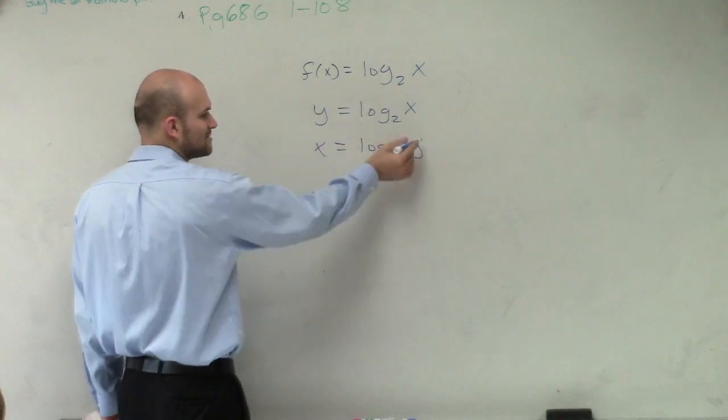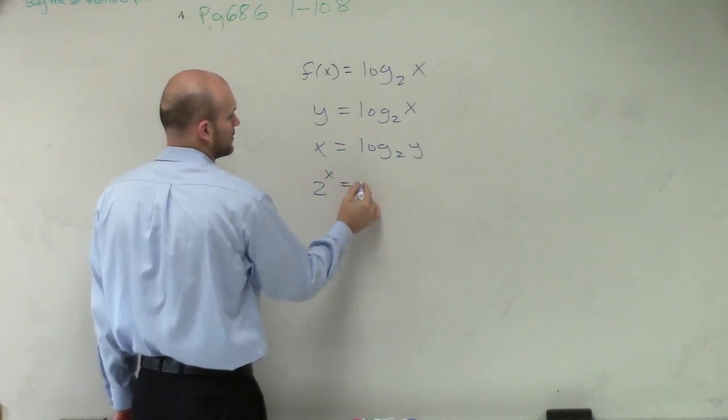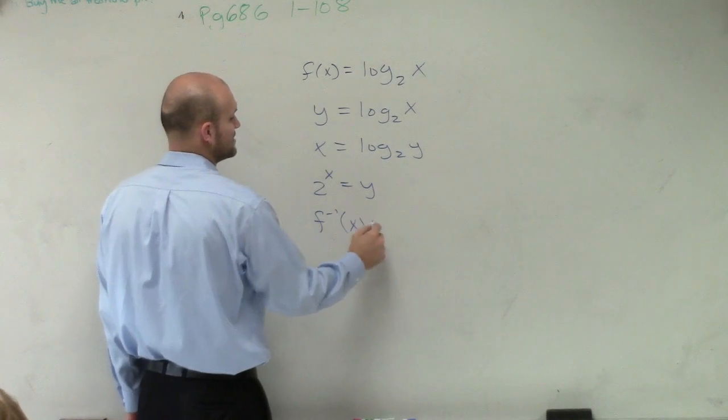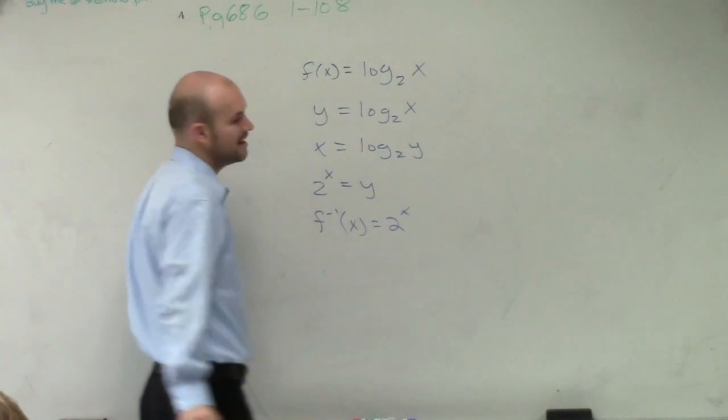This would be 2 raised to the x power equals y. So therefore, now we rewrite this as f inverse. f inverse of x is equal to 2 raised to the x.